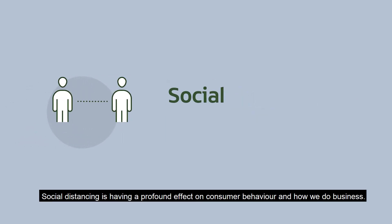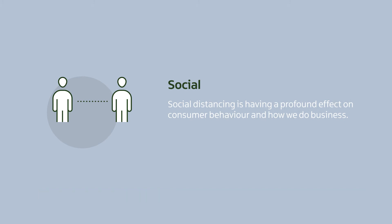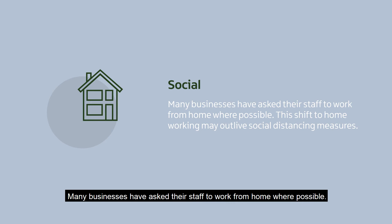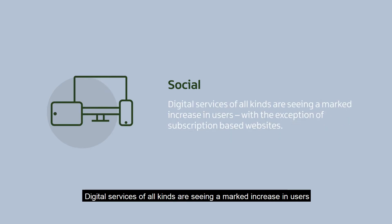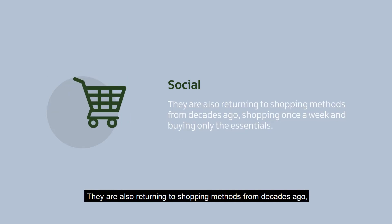Social. Social distancing is having a profound effect on consumer behaviour and how we do business. Many businesses have asked their staff to work from home where possible. This shift to home working may outlive social distancing measures. Digital services of all kinds are seeing a marked increase in users, with the exception of subscription-based websites. In an effort to reduce outgoings, consumers are suspending memberships and deferring optional payments. They are also returning to shopping methods from decades ago, shopping once a week and buying only the essentials.